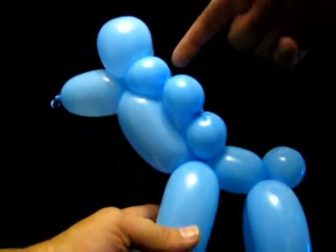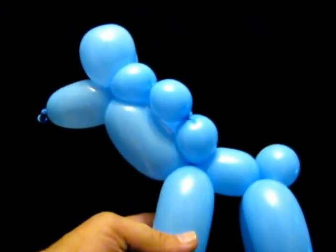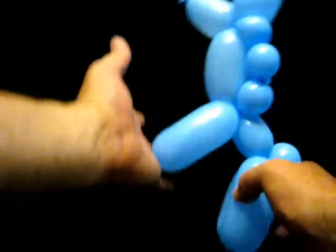We have front legs, we have back legs, we have a mane, ears, and a nose. And we can check to see if it's a real horse. Whee!